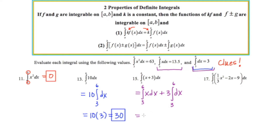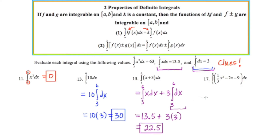The first one is going to be 13.5, and then we add 3 times this value, which is defined to be 3. So it's really going to be 13.5 plus 9, or 22.5. And now we'll take a look at the last one.